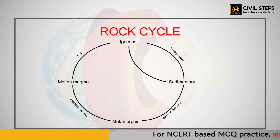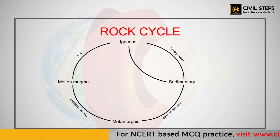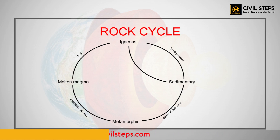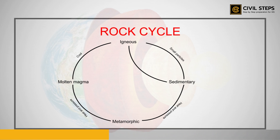Metamorphic rocks that are still under great heat and pressure melt down to form molten magma again, and this molten magma can cool down and solidify into igneous rock. So in the rock cycle, igneous rocks change into sedimentary rocks, which in turn change into metamorphic rocks, which can again change back into igneous rocks.